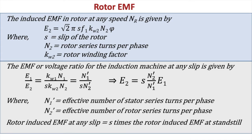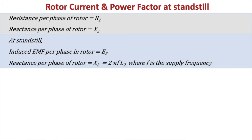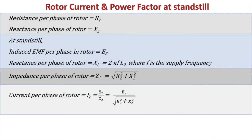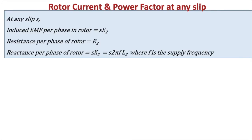For rotor current and power factor at standstill: the rotor resistance per phase is R2 and the rotor reactance per phase is X2 = 2π f L2, where f is the supply frequency. The rotor impedance is Z2 = √(R2² + X2²). The rotor current per phase is I2 = E2 / √(R2² + X2²), and the power factor is cos θ2 = R2 / Z2 = R2 / √(R2² + X2²).